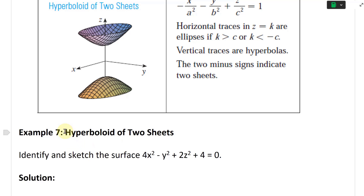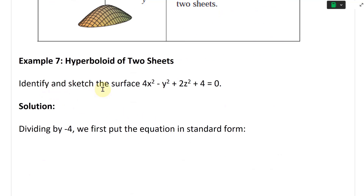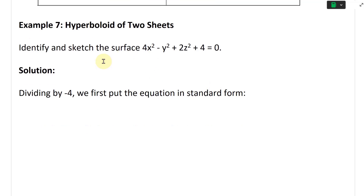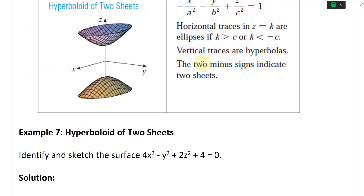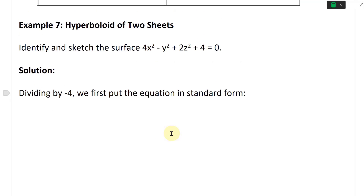Look at Example 7 - this is a hyperboloid of two sheets. The problem says: identify and sketch the surface 4x² - y² + 2z² + 4 = 0. Dividing by 4, we need to get this in standard form. It's going to be a hyperboloid of two sheets, so we first put the equation in standard form and see what happens.